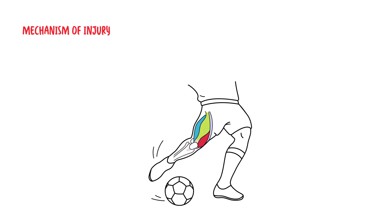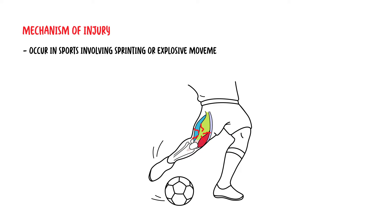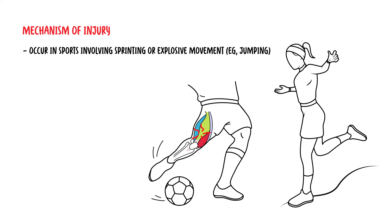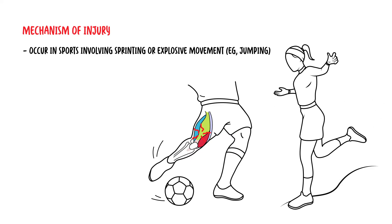Mechanisms of quadriceps muscle injury occur more often in sports involving sprinting or explosive movements such as jumping or cutting, where the quadriceps is needed to generate power and elevation. Quadriceps muscle injuries are more common in athletes.